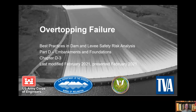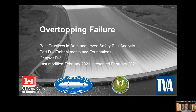Today we'll be discussing the third chapter under Embankments and Foundations, Chapter D3, Overtopping Failure. We'll focus on three objectives: mechanisms for overtopping and wave overwash, event tree for overtopping, and probability of failure with breach erosion or fragility curves.